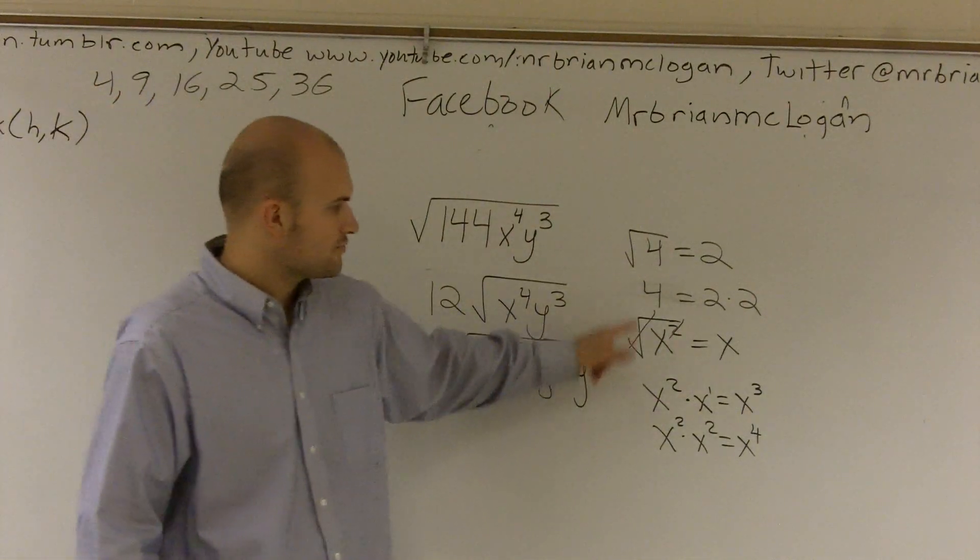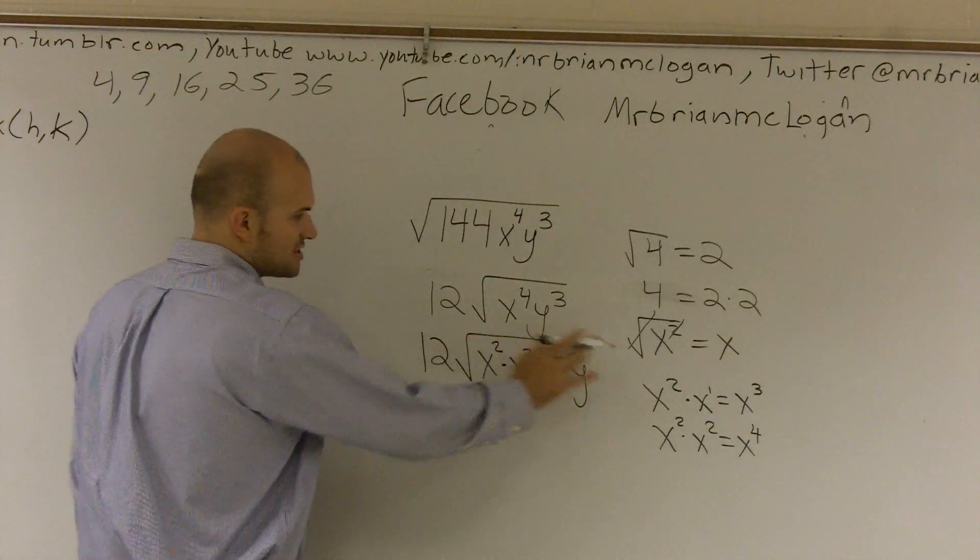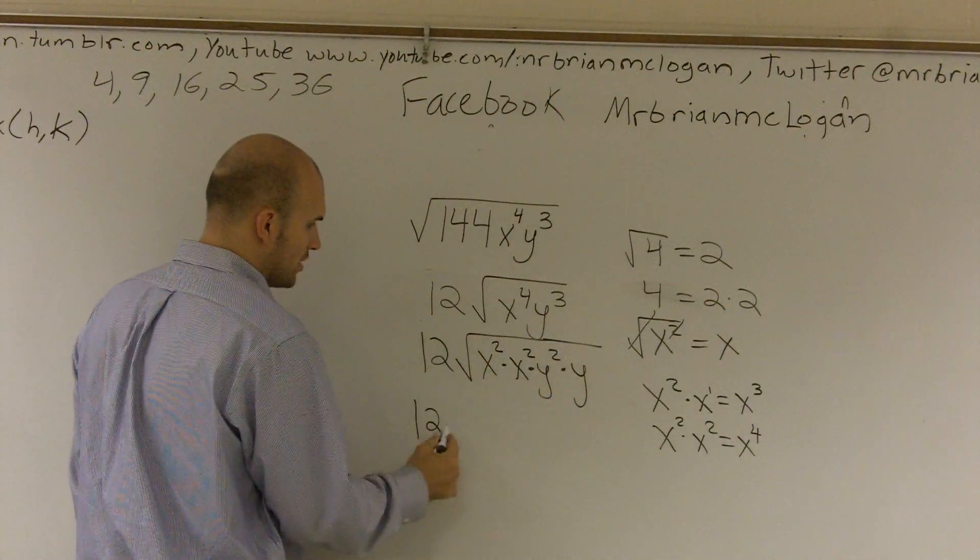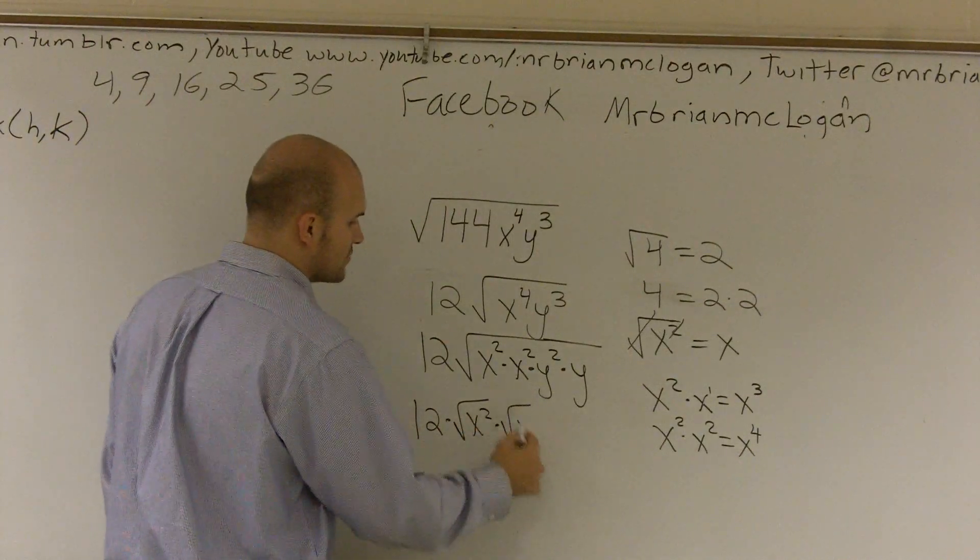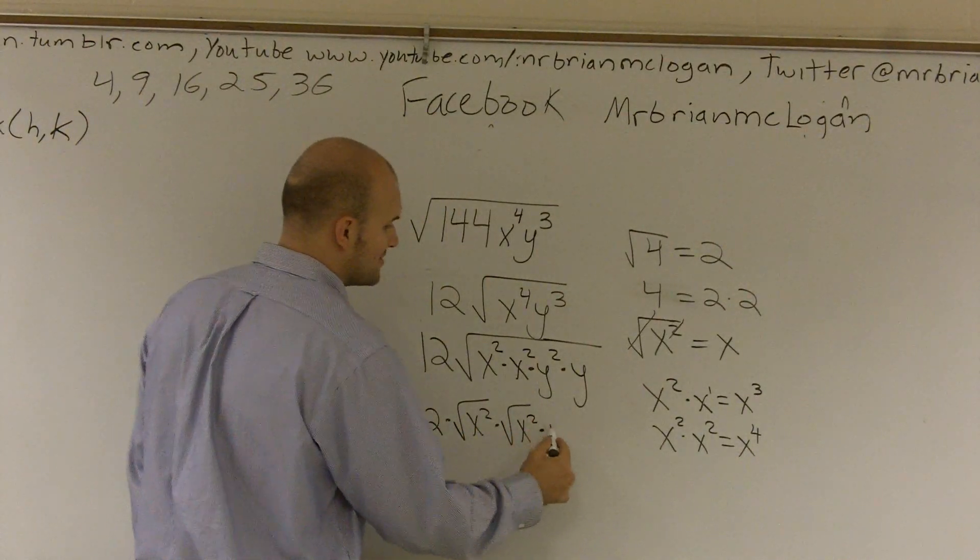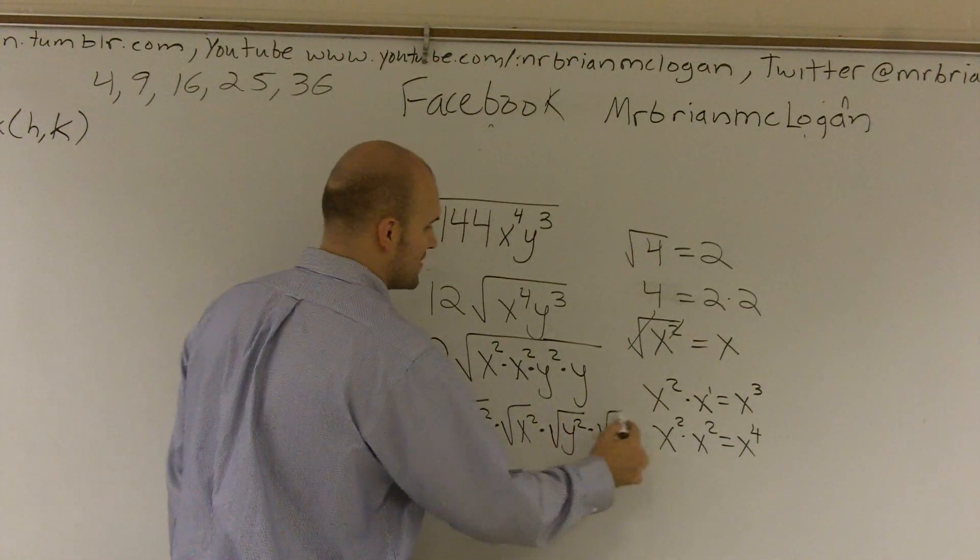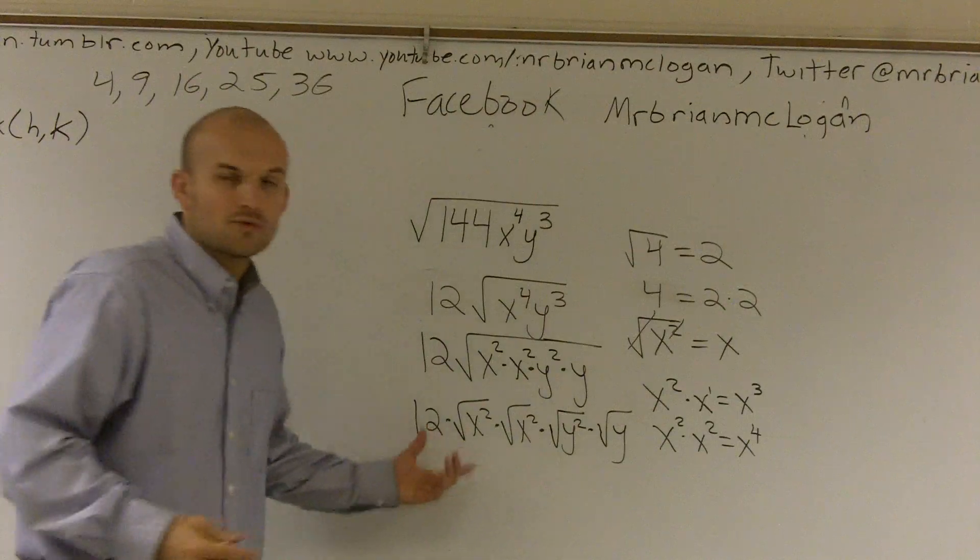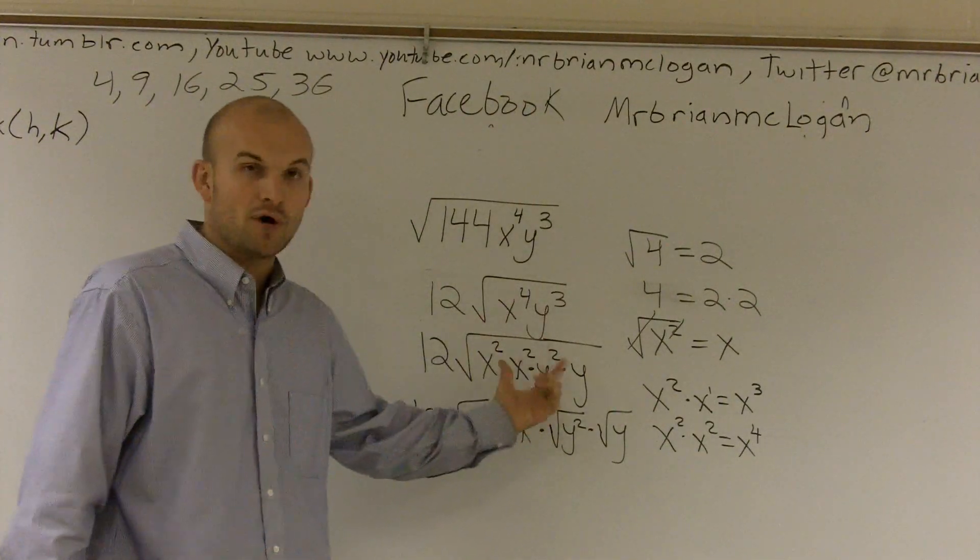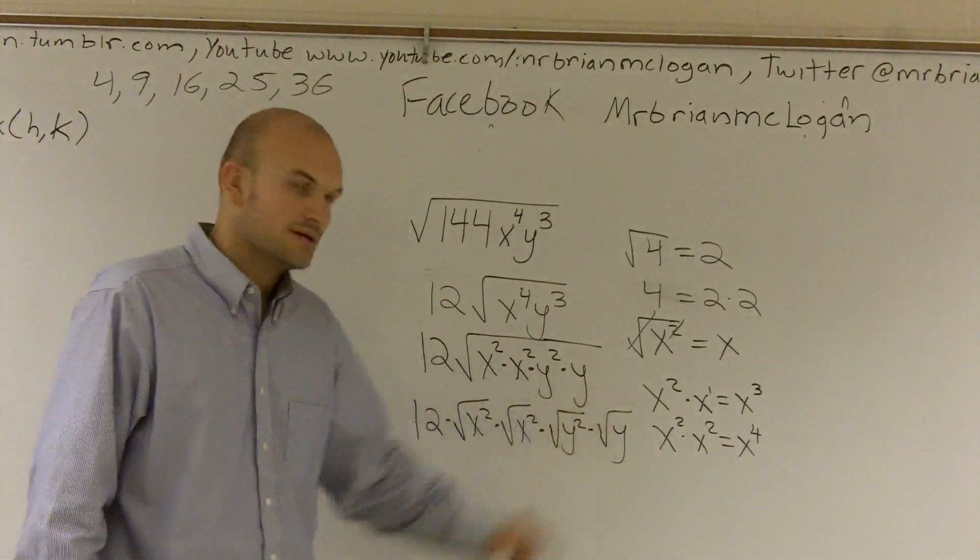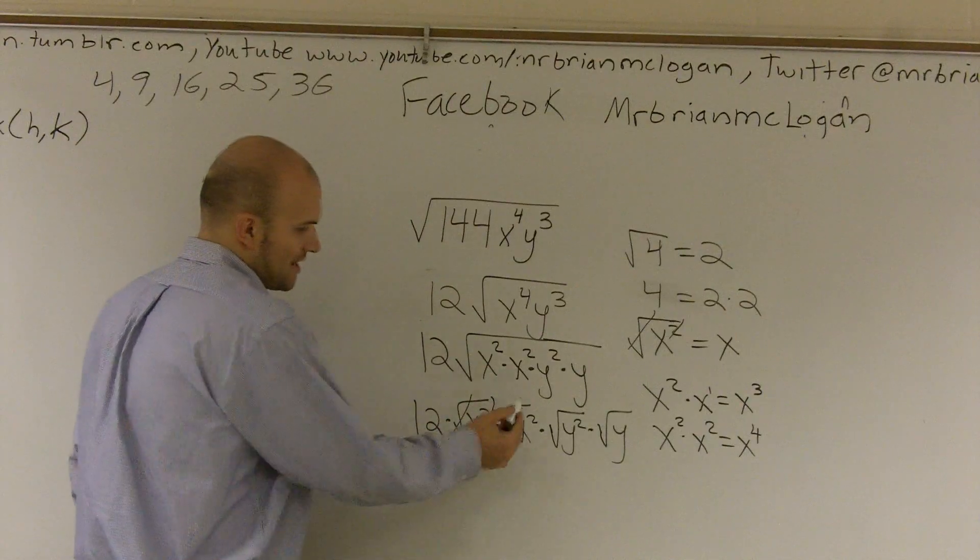Then, using my rule that the square root of x squared equals x, I know that I'm going to actually split these all up. So I'm going to write 12 times the square root of x squared times the square root of x squared times the square root of y squared times the square root of y. And that's your rules of your roots, that if you're taking the square root of something and everything inside there is multiplied by each other, you can actually just split that up. So now, the reason why I did that is because I want to show you how it's easy to cancel out.